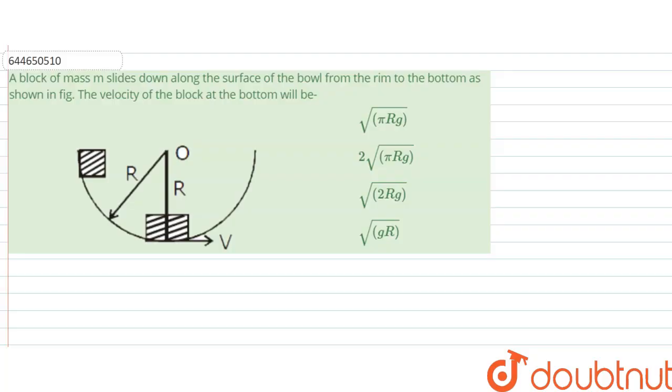Hello, we are given with a question. The question says that a block of mass m slides down along the surface of the bowl from rim to the bottom as shown in figure. So from here it travels to this position. The velocity of the block at bottom will be what?